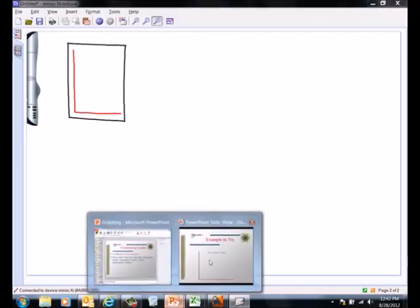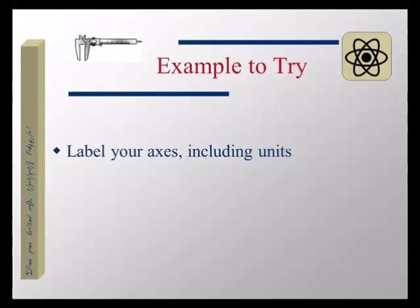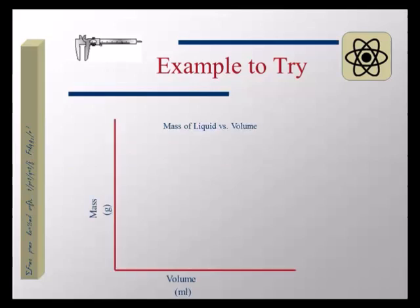Next, we need to label those axes. Label the y-axis with whatever variable should go there and the correct units. Label your x-axis with whatever variable should go there along with the correct units. You should have mass on the vertical axis — that's the dependent variable — along with the units for mass, which are grams. And volume should go on the horizontal or x-axis with units of milliliters. That's the independent variable.